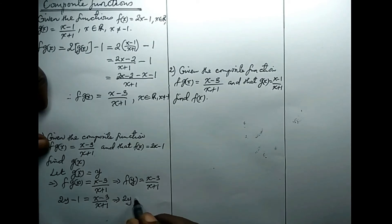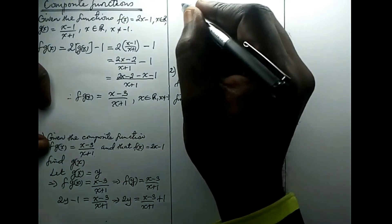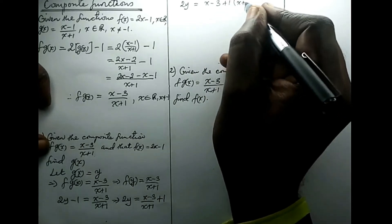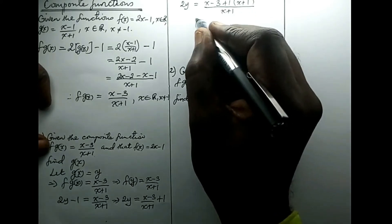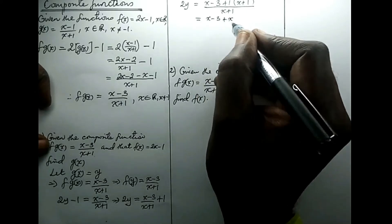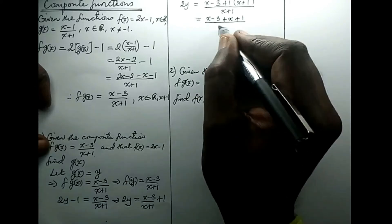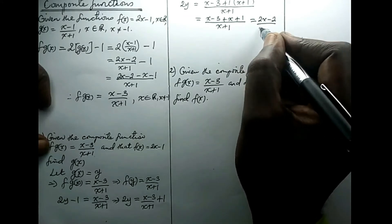This implies that 2y equals x minus 3 all over x plus 1 plus 1. Our aim is to make y the subject, as that gives us the g of x we are looking for. So 2y equals x minus 3 plus 1 times x plus 1, all over x plus 1. That gives x minus 3 plus x plus 1 all over x plus 1, which simplifies to x minus 2 all over x plus 1.